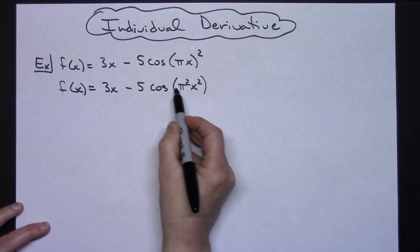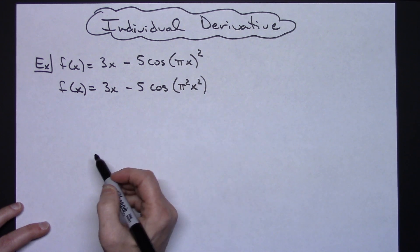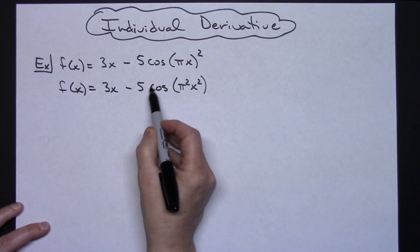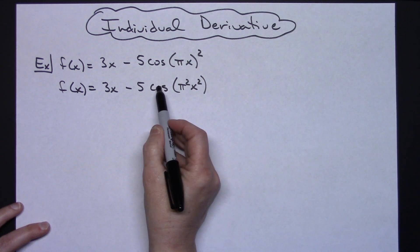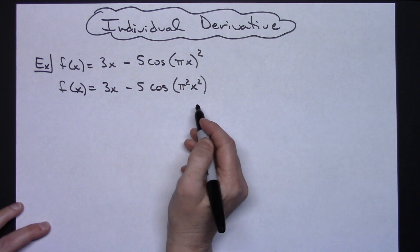Alright so that we clearly have the inside part of our function here. We're taking the cosine of something right here. Now I can take a look at this expression. I can take the derivative of the outside function which is cosine and the inside function which is pi squared x squared.